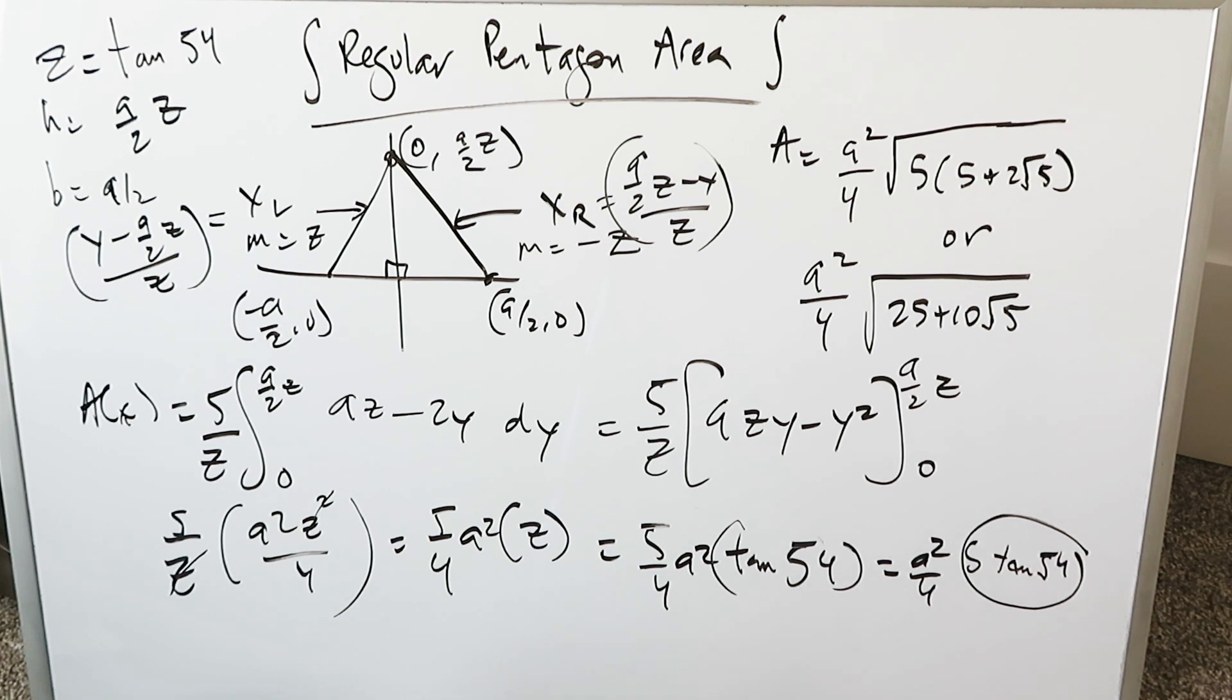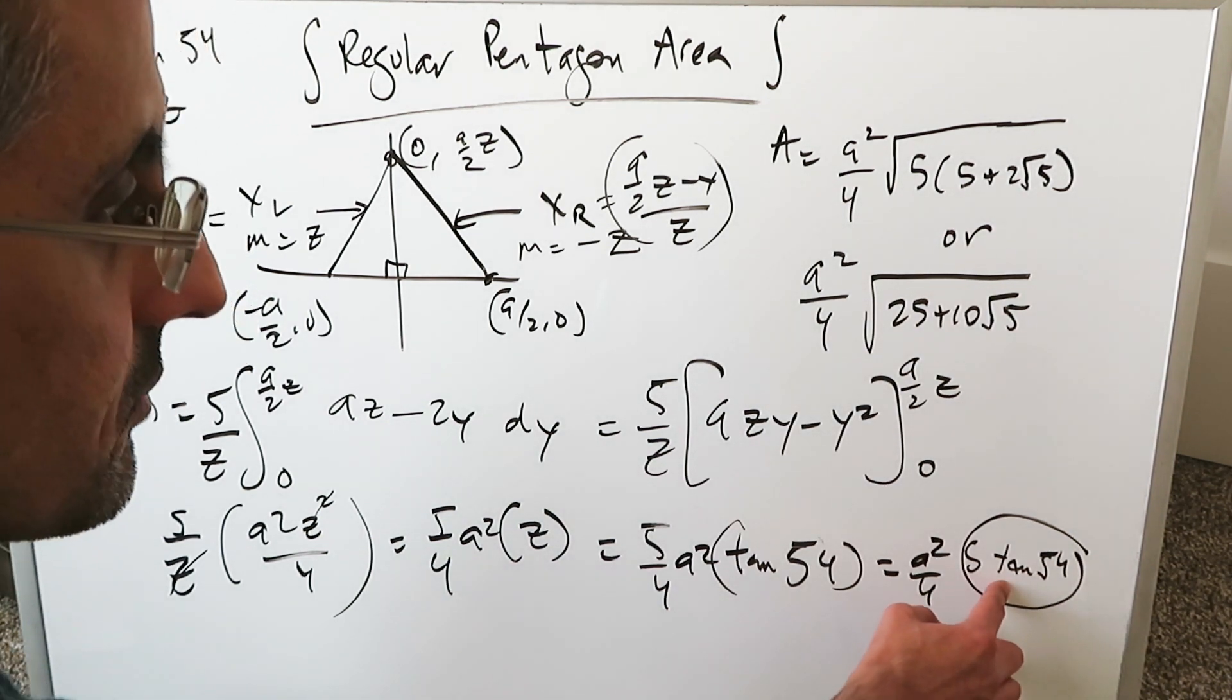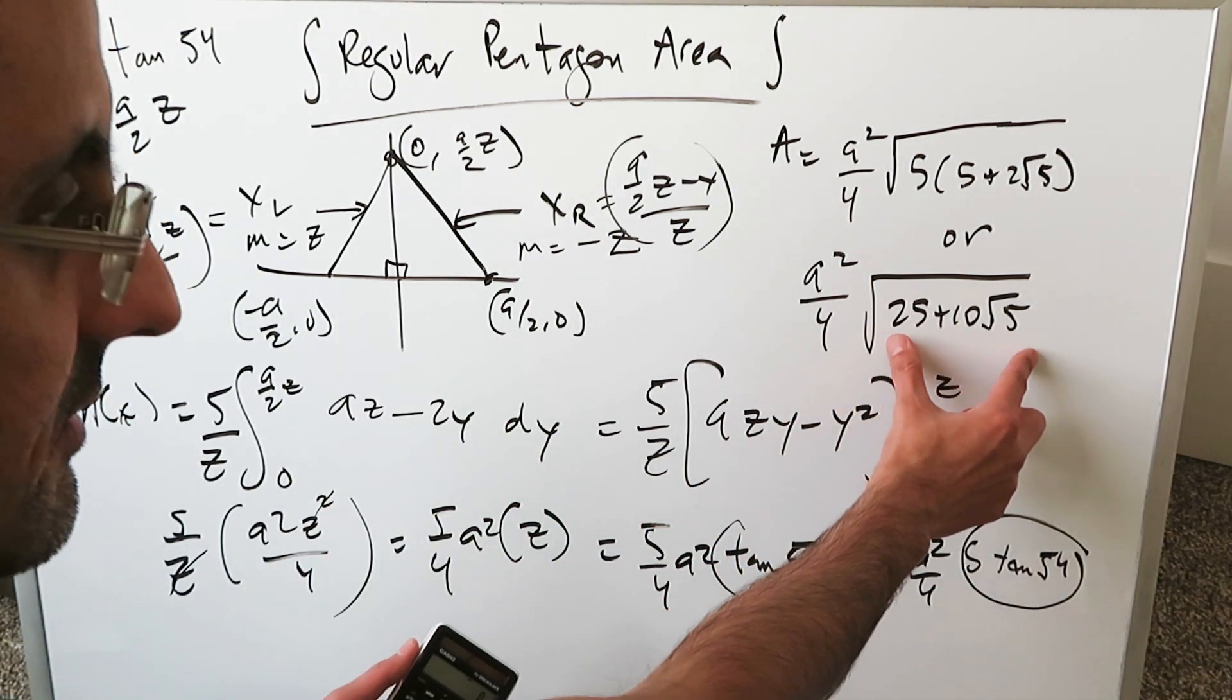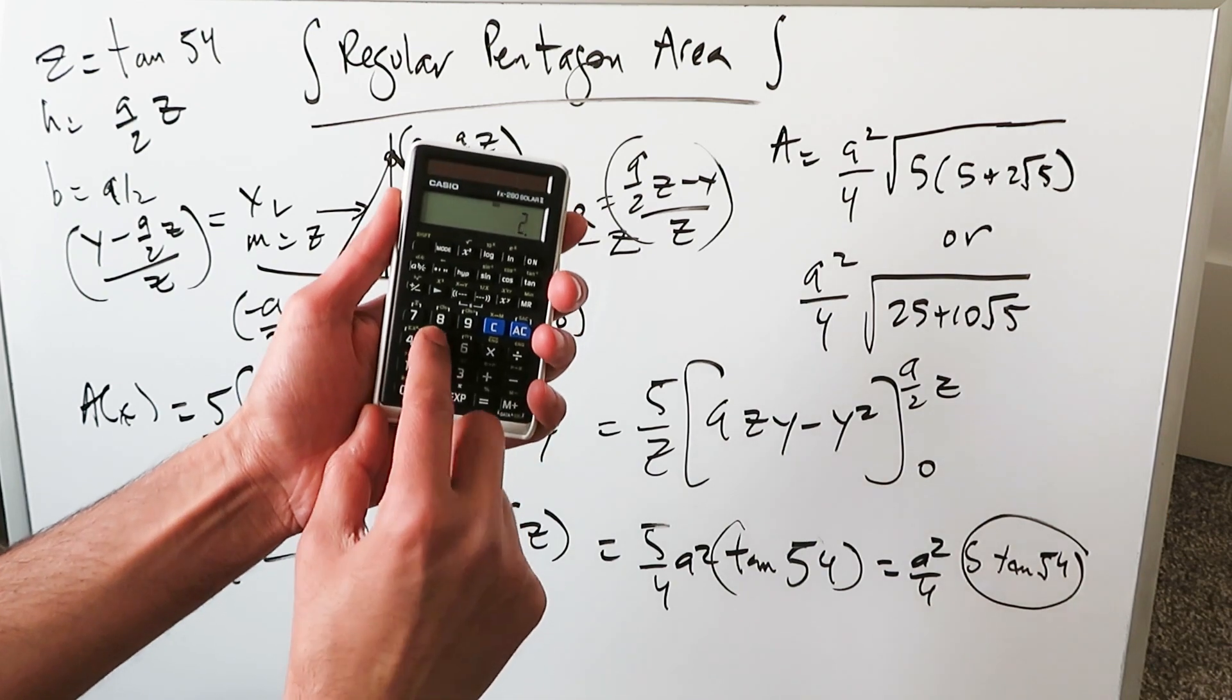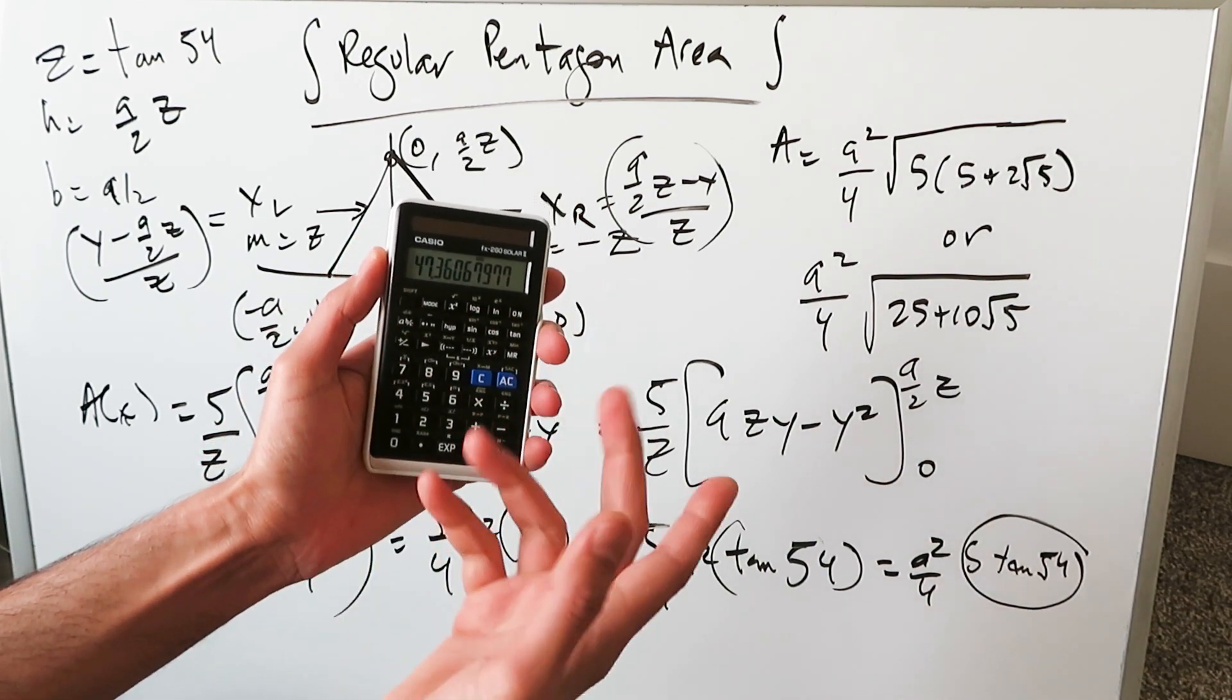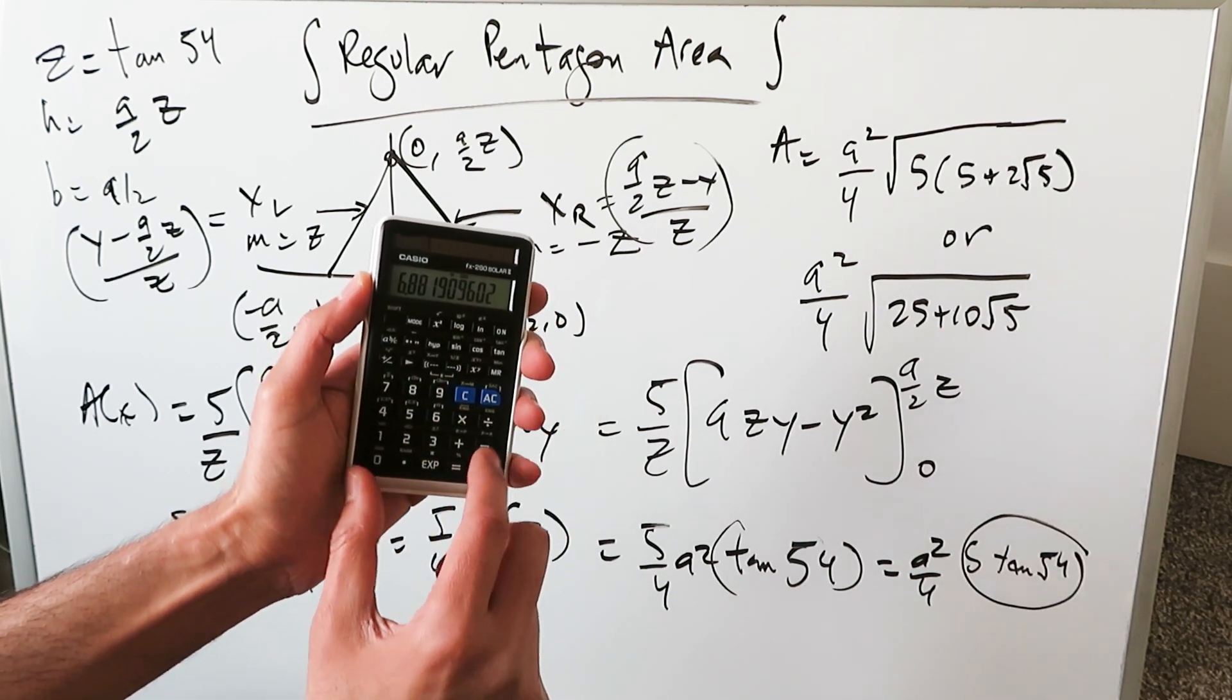It would take a lengthy rationalizing algebraic procedure with a lot of trigonometric identities coming into play to show that this right here is equal to this right here, but I can show you mathematically it is. Look right here at this particular item. You have 25 plus 10 times 5 root, but all of this is sitting within a radical and I'm going to radical it. You have 6.8819. I'm just saving that.